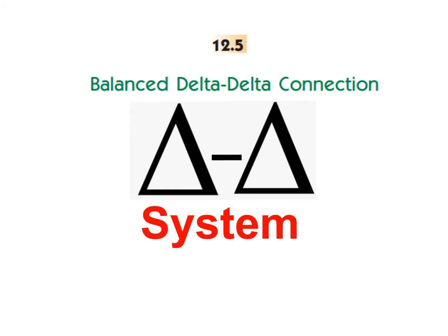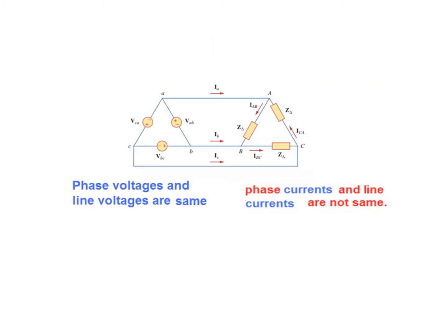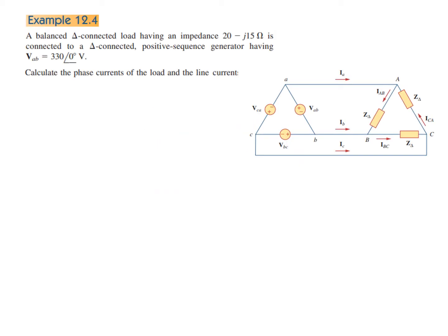In this video we'll discuss balanced Delta-Delta connection. As we discussed earlier, in case of a Delta the phase voltage and line voltages are the same. In case of a Delta load, the phase current and line currents are not the same — the line current comes in and divides into two parts as phase currents. So line current is not equal to phase current. Keep this point in mind.